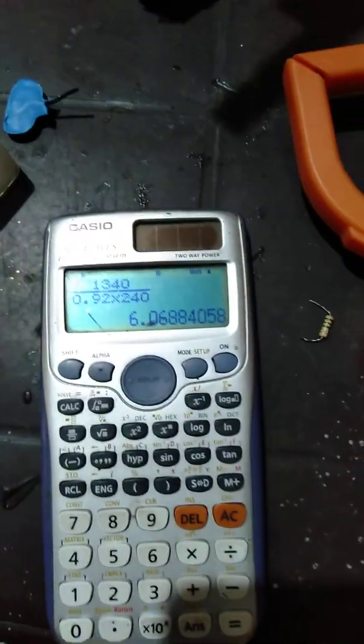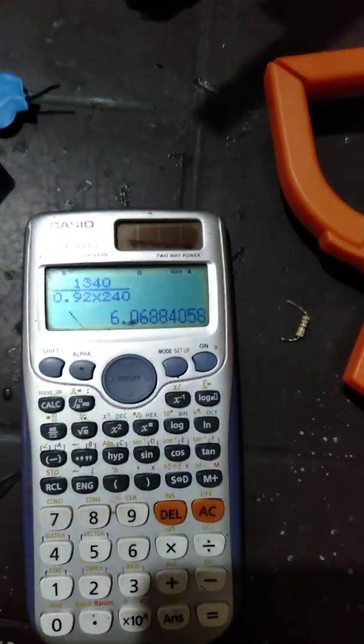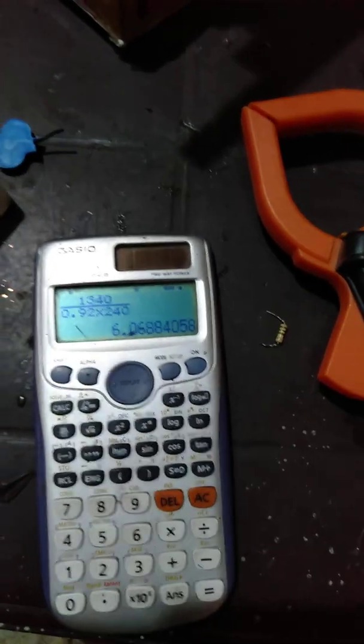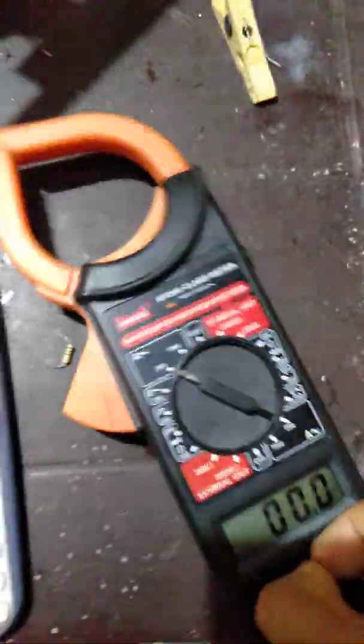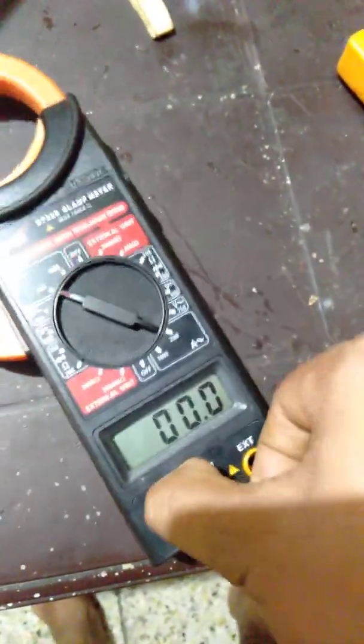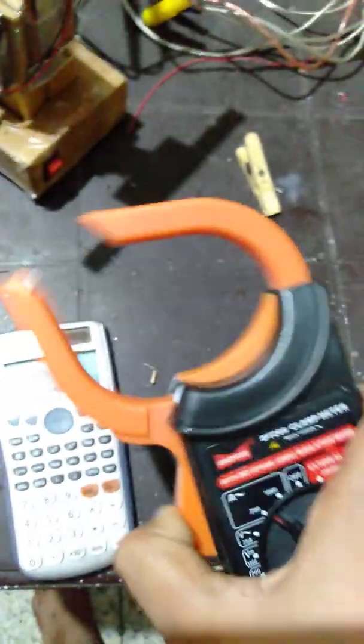Let's see how much it measures in current mode. In current mode, we're just going to remove the probes from here and only use the clamp.